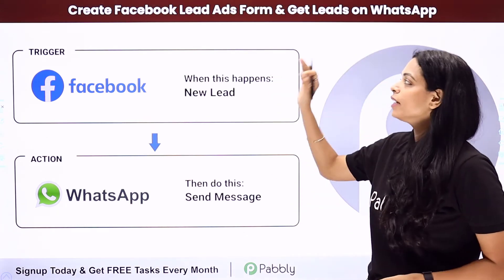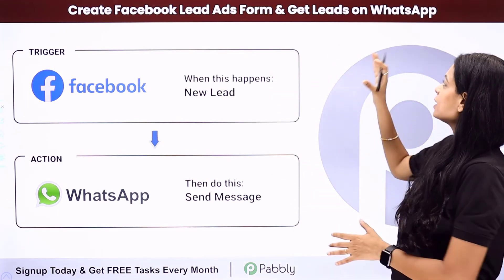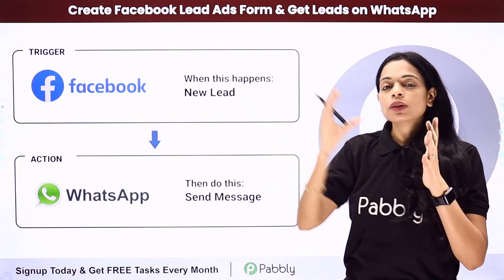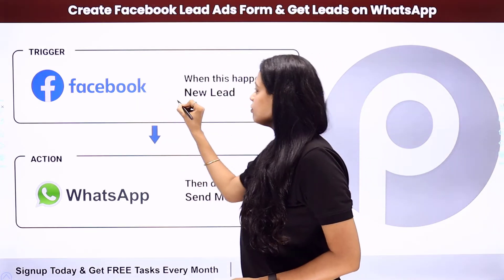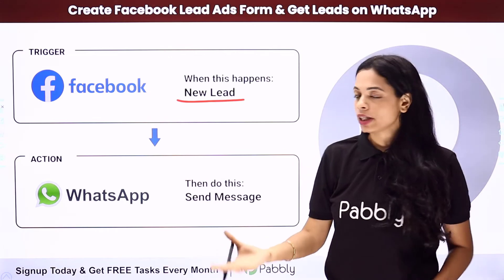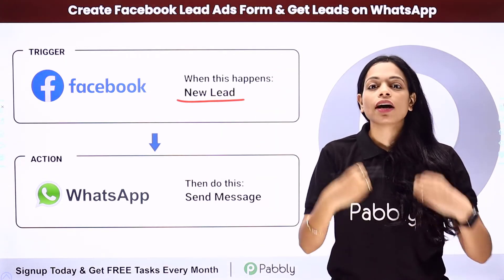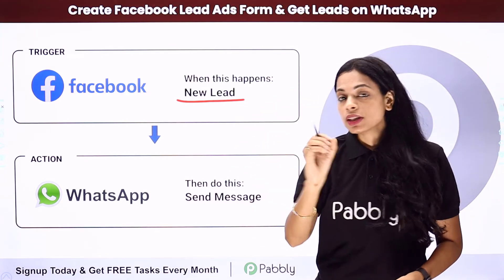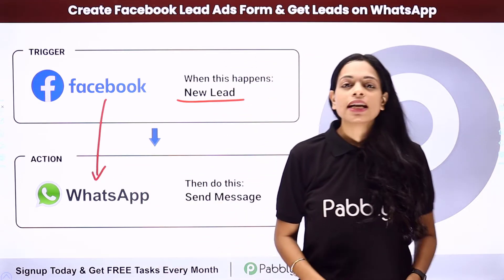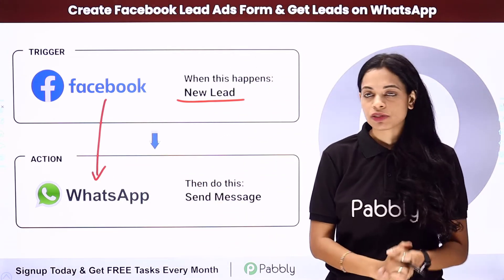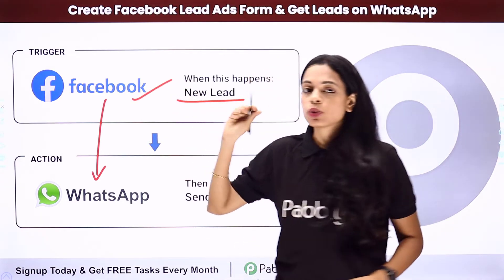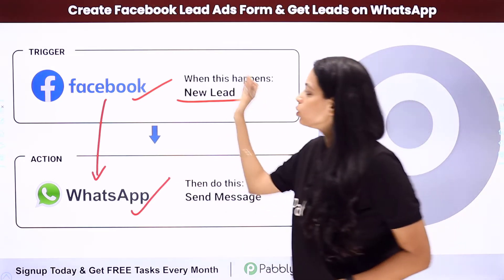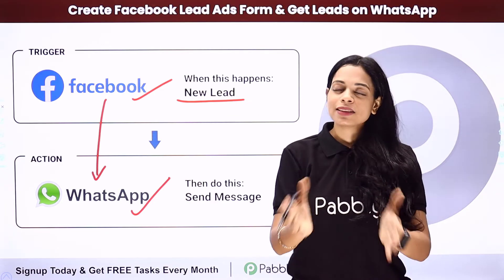In this video, we are going to see how to create a Facebook Lead Ads form and get leads on WhatsApp. First we are going to start with creating a Facebook Lead Ads form, and once done, let's say you have received a new lead through the forms that you have shared. This particular lead has to be sent a WhatsApp message talking about your business and new offers. For this, you will have to integrate these two applications using Pabbly Connect software. Your trigger would be Facebook Lead Ads and your action application would be WhatsApp. Let me take you to my screen.